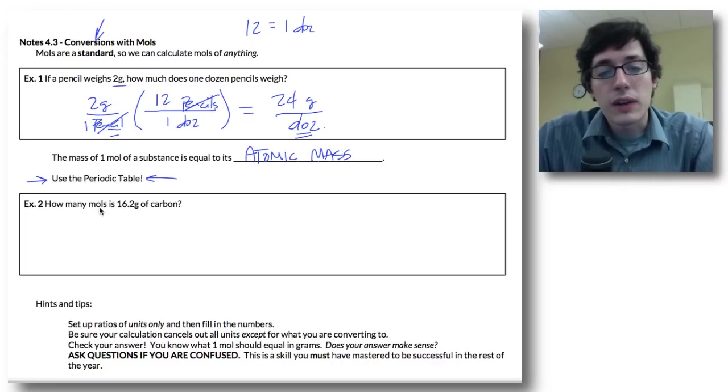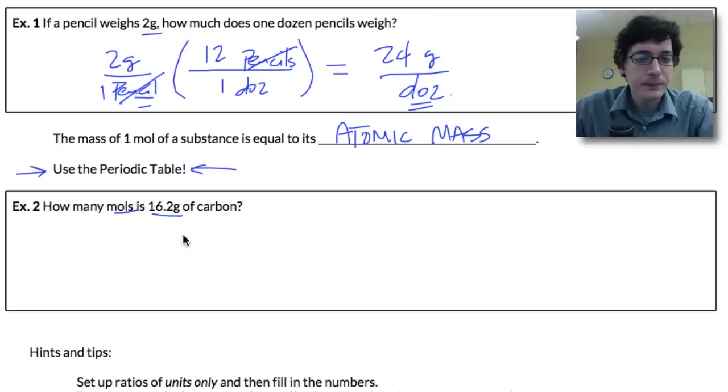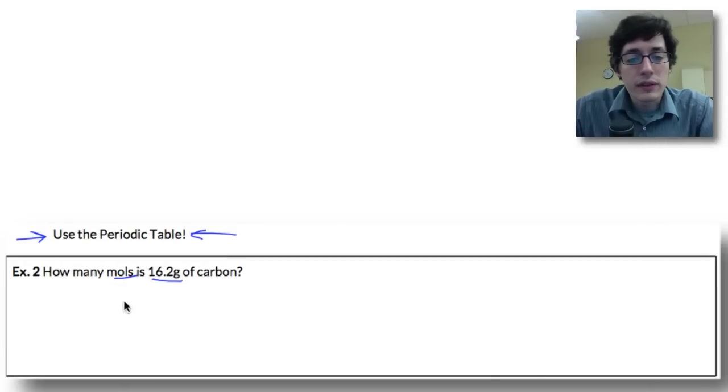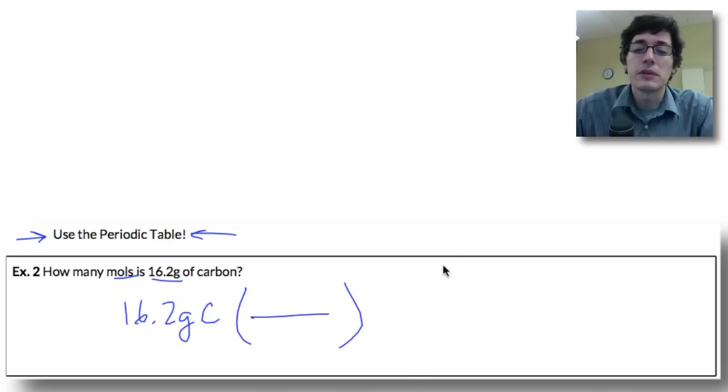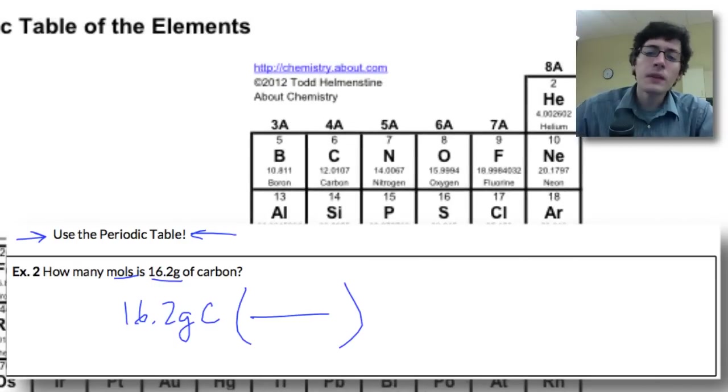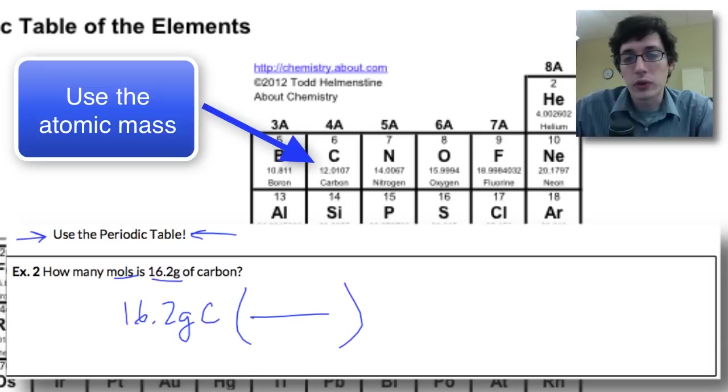So here's a conversion factor. How many moles is 16.2 grams of carbon? Now what we start with is 16.2 grams of carbon, and we need a conversion factor. And this is where the periodic table comes into play. So take a look at your periodic table, and you will see that carbon has a mass of 12.01, and we're going to round this to a whole number.